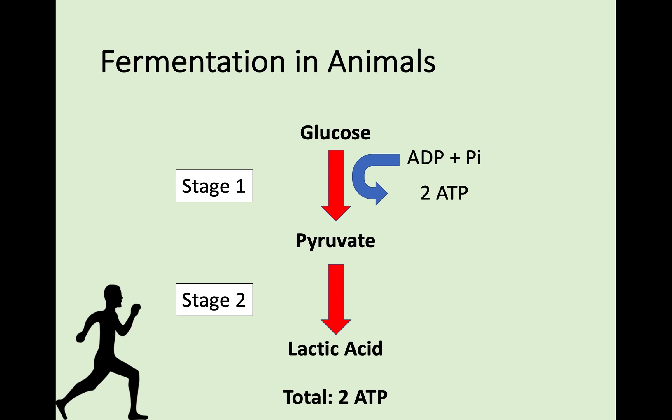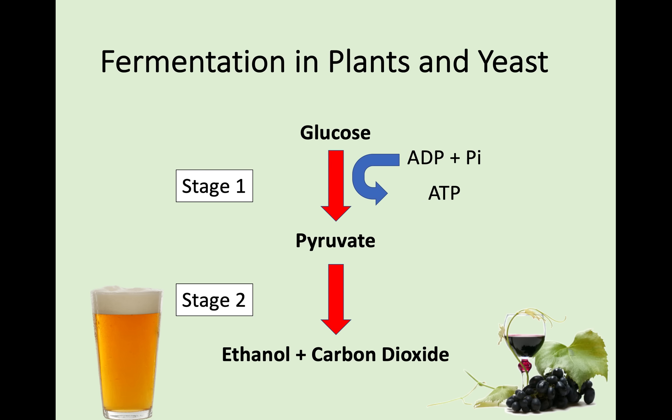In total for anaerobic respiration in animal cells, you only have that two molecules of ATP produced in stage one. In plants and yeast, stage one is the same and aerobic respiration is the same, but fermentation is slightly different — lactic acid is not produced. Instead, pyruvate is broken down into ethanol, which is an alcohol, and carbon dioxide. This is the process used in making beer or wine — yeast is used, oxygen is deprived, and alcohol is produced. You still only have that net gain of two molecules of ATP.